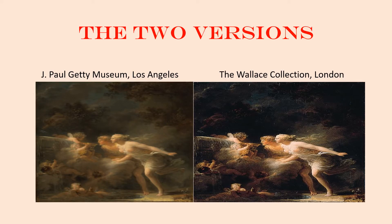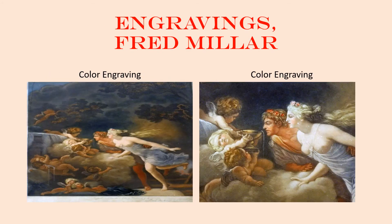The two versions of The Fountain of Love are strikingly different in their mood and style, with the version in the Getty Museum being a more Rococo style, and the other at the Wallace Collection in London being a more neoclassical style. This painting has a riveting sense of drama, heightened contrast of light and shadow, and a restricted palette suggestive of neoclassical mystery, with characteristics that indicate a new romantic sensuality.